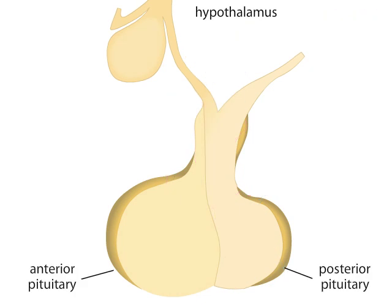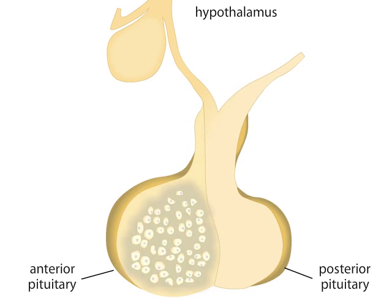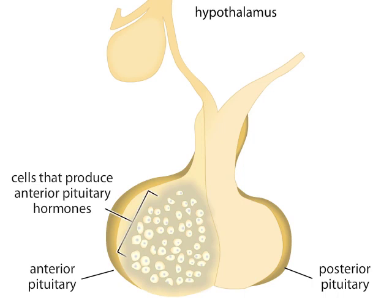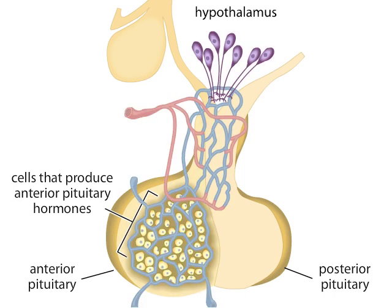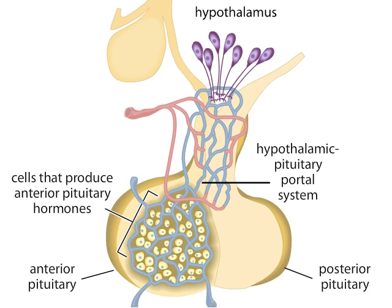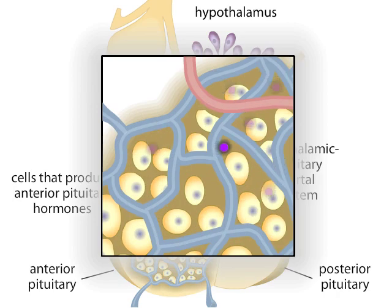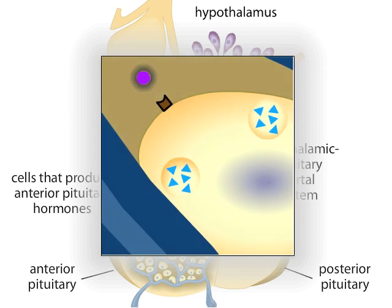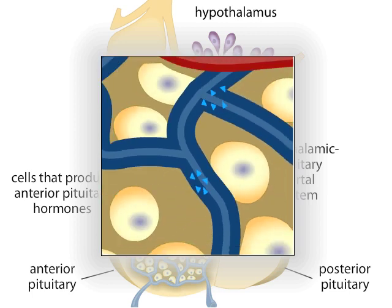Unlike the posterior pituitary, the anterior pituitary consists of glandular tissue. The gland consists of numerous cell types which specialize in making and releasing specific hormones. However, these hormones are only released — or in some cases inhibited from being released — in response to hypothalamic hormones. An elaborate web of capillaries called the hypothalamic-pituitary portal system connects the glandular cells with neurons from the hypothalamus. The neurons abut the capillaries and, when stimulated, release hormones into the circulation. The hypothalamic hormones travel directly to the cells of the anterior pituitary, where a specific hormone affects a specific type of anterior pituitary cell. Each cell type, in turn, produces and releases its own hormones into the general circulation.